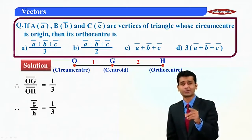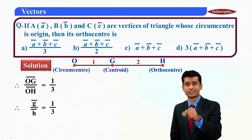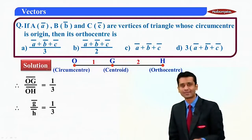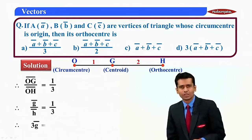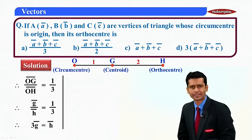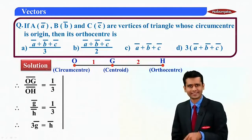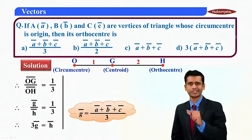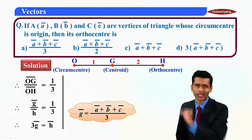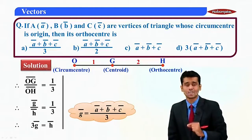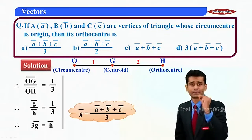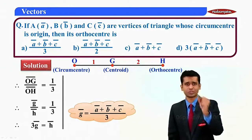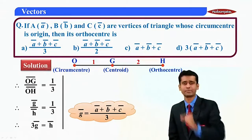Because OG-bar is the position vector of G (that is g-bar) and the position vector of H is OH-bar (h-bar). Cross multiplying, we get 3·g-bar = h-bar. You have studied the centroid formula: g-bar = (a-bar + b-bar + c-bar) / 3.